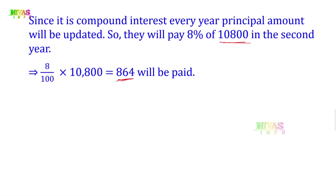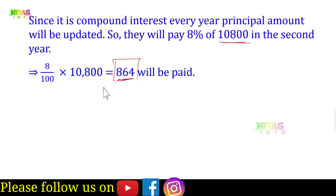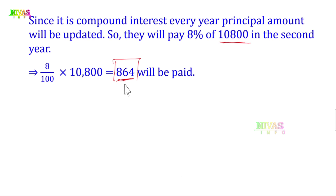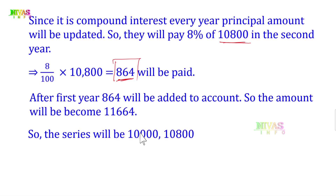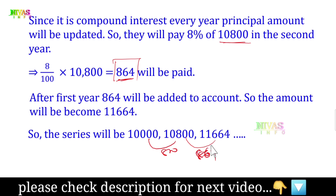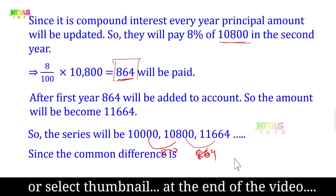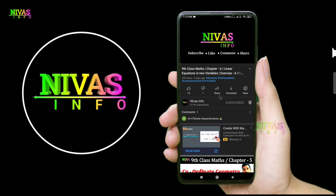In the second year, 8% of 10,800 = 864 rupees is added. So after the second year the amount becomes 11,664. The series is 10,000; 10,800; 11,664; and so on. The differences are 800 and 864 — not the same fixed number. Since the common difference is not constant, the series is not in arithmetic progression.